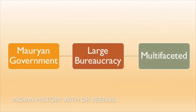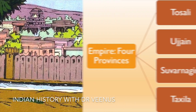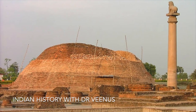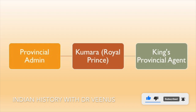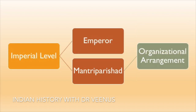The Mauryan government had a large bureaucracy responsible for many aspects of life. Patliputra served as the imperial capital, and the empire was divided into four provinces — Toshali, Ujjayin, Suvarnagiri and Takshila — as the four regional capitals according to Ashokan edicts. The provincial administration was overseen by the Kumar, a royal prince who acted as the king's agent in the provinces. The Kumar received assistance from the Mahamatryas and the council of ministers. At the imperial level, the emperor and his mantri Parishad matched this organisational arrangement.